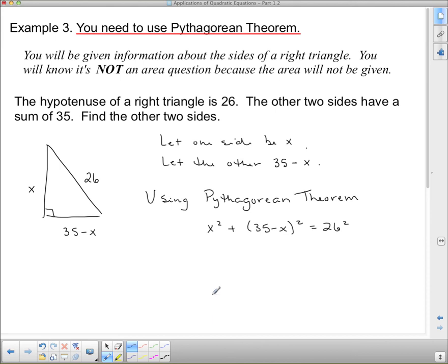Now, we need to expand and simplify this. So, I get x squared plus, and if people make a mistake here, it's expanding this 35 minus x squared. Remember, when you square a binomial, there is a middle term. So, we're going to expand that out. And when I expand it out, I get 1225. That's 35 squared. Then, I have to multiply these two things together and double it, which gives me minus 70x. And then, I square the last term, which gives me plus x squared. Now, on this side, 26 squared is 676.